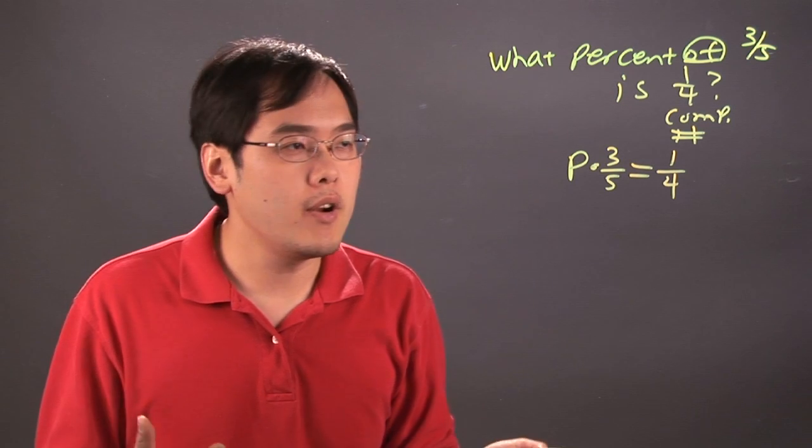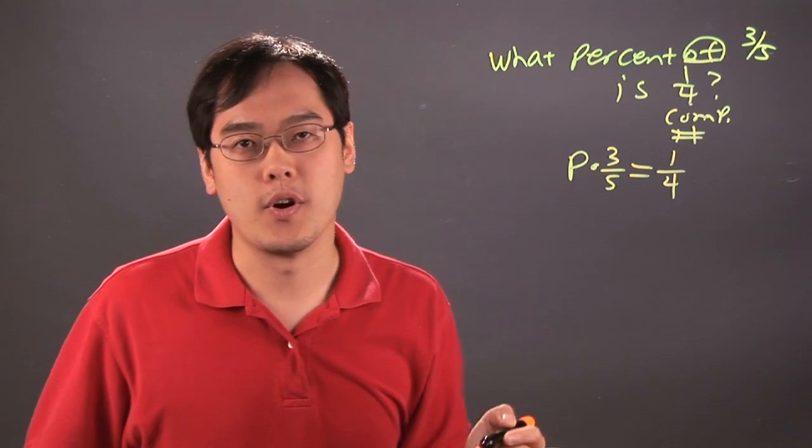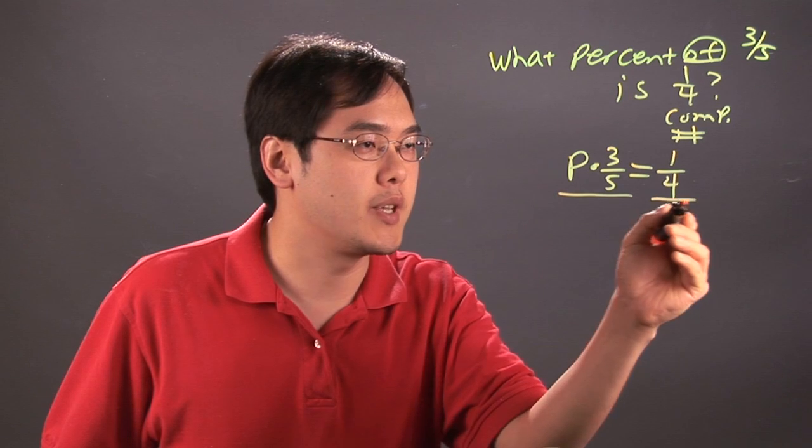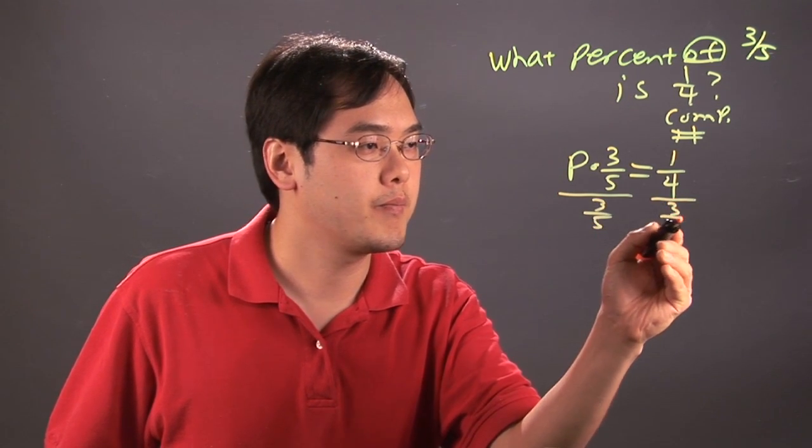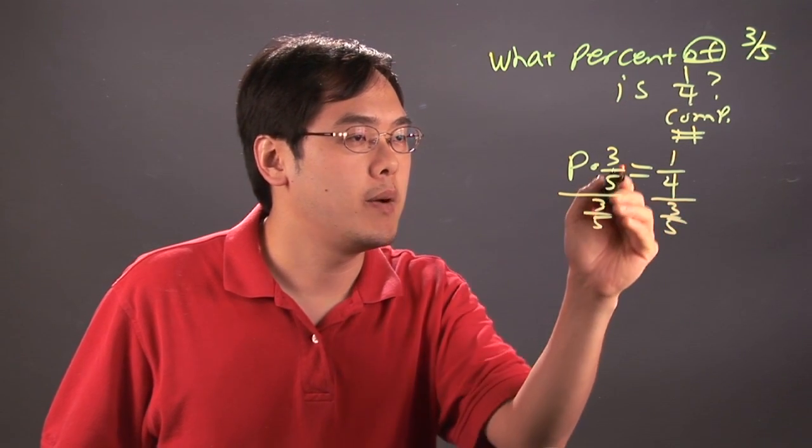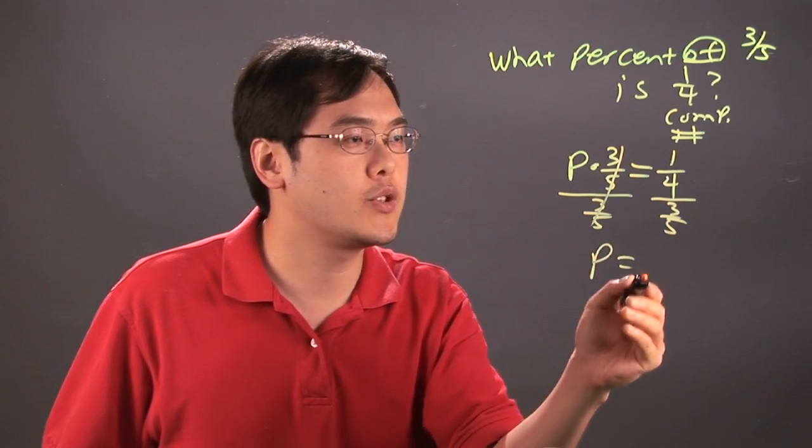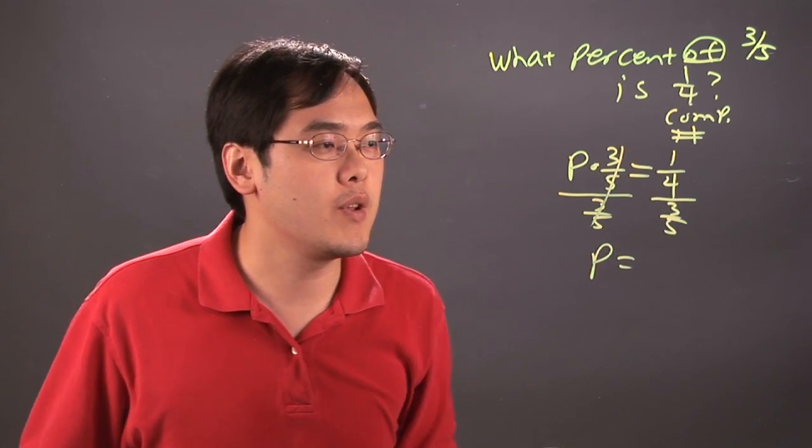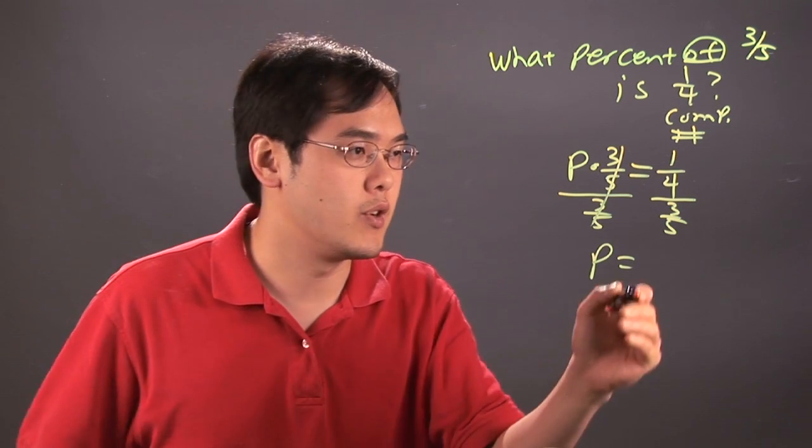Now where you want to go from there is you want to solve for p. To get p by itself you have to divide both sides by three-fifths so the three-fifths cancel. So you have p is equal to one-fourth divided by three-fifths, so you really have to multiply by the reciprocal, which is five-thirds.